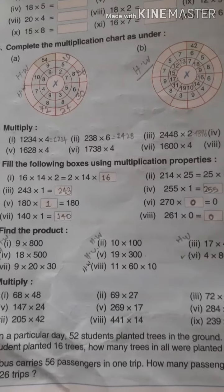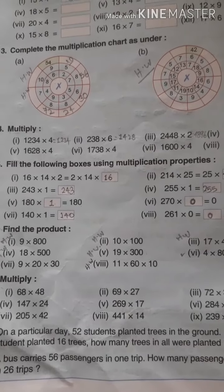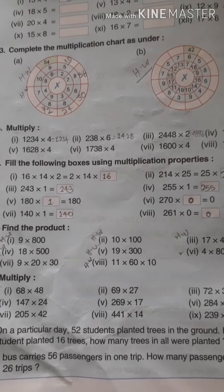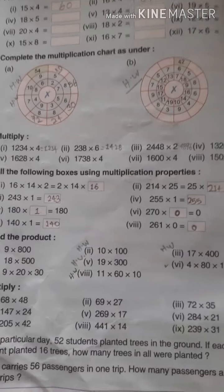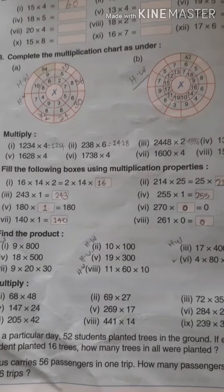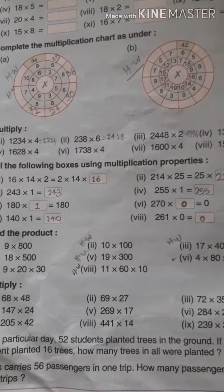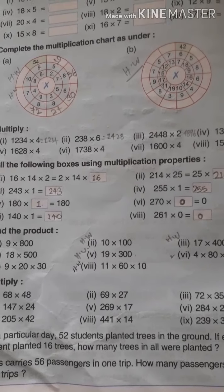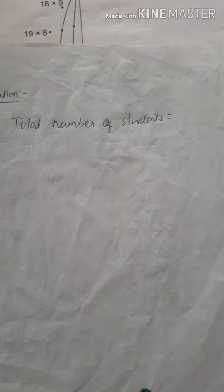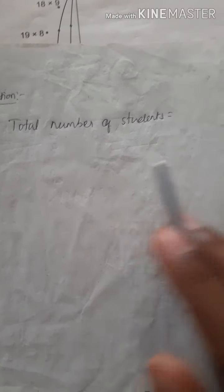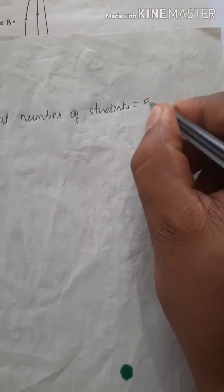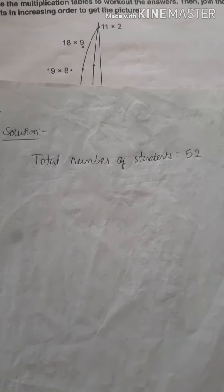Now question number 6: take your copy and write this question — 4 into 80 into 10. For this question, first we have to multiply 80 into 4, or 4 into 80. Let's check what is 4 into 80.